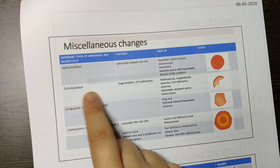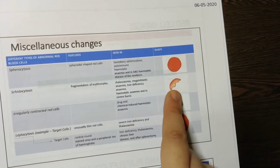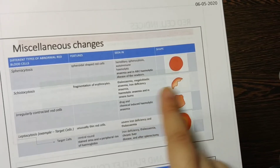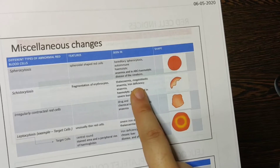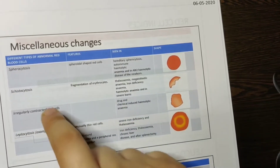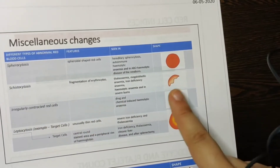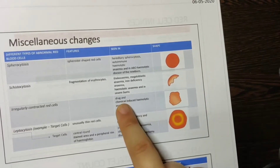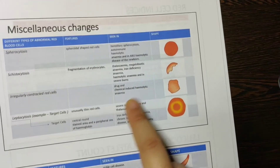Then schistocytosis. Schistocytosis means there is fragmentation of red blood cells — fragments means these are broken parts. These are seen in thalassemia, megaloblastic anemia, and iron deficiency anemia. The next is irregularly contracted red cells — the name itself means the feature — you have irregularly shaped RBCs. These are seen in drug use or chemical-induced hemolytic anemia.